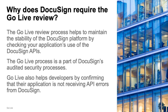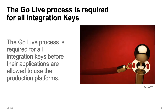After GoLive, once your application is live in production, DocuSign continues to check your application to ensure that it is using the APIs correctly. The GoLive process is required for all integration keys before their applications are allowed to use the production platforms. There are no exceptions to the GoLive policy.